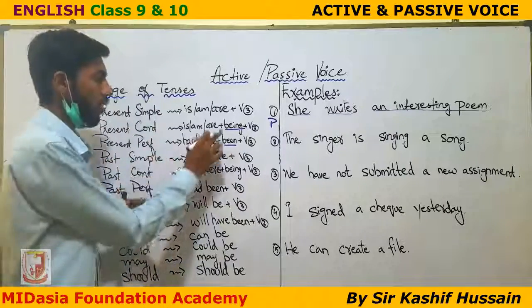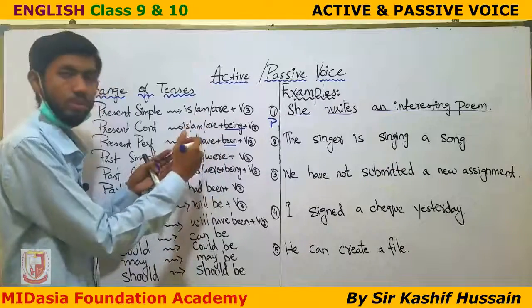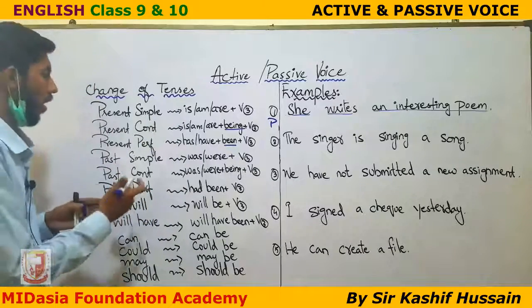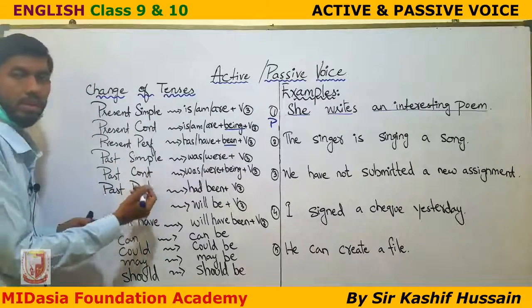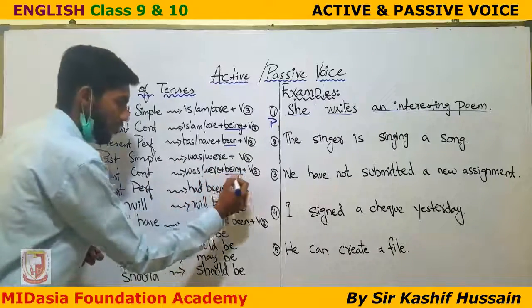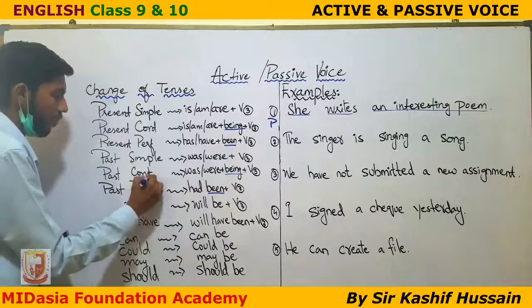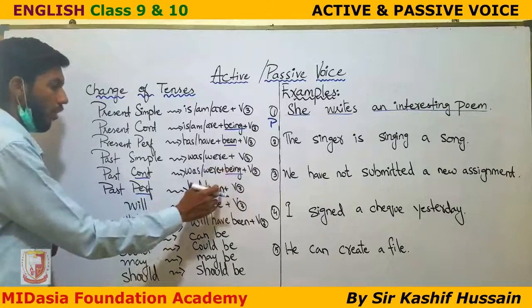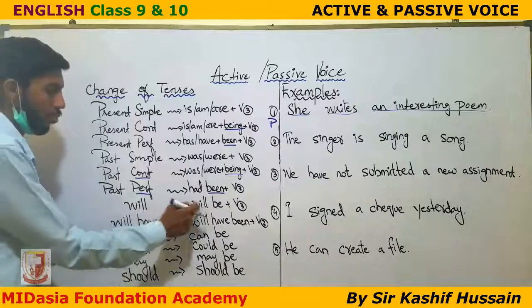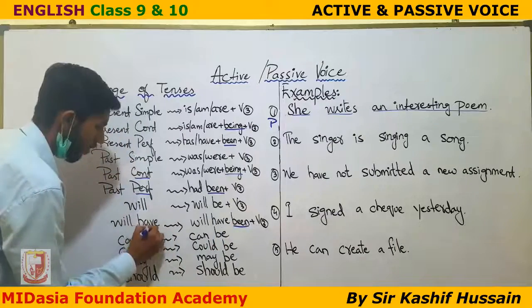Be careful not to confuse 'being' and 'been' — there is a difference between them. For past simple tense, we use 'was/were' plus the third form. For past continuous, we use 'was/were being'. For past perfect, we use 'had been'. For future tense, 'will' becomes 'will be' plus the third form, and 'will have' becomes 'will have been' for future perfect.